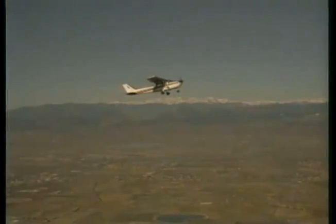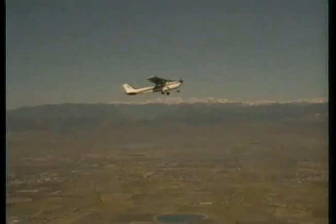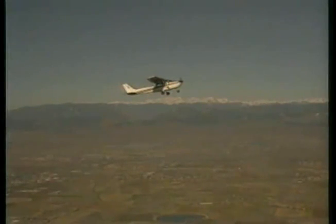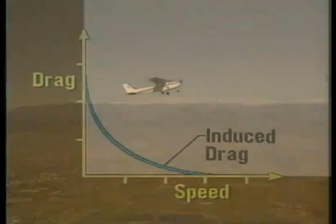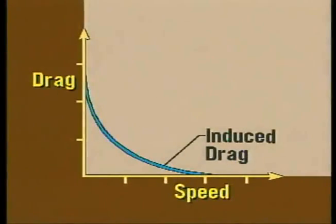As the speed of an airplane increases, the effects of parasite drag also increase. In contrast, induced drag is a direct byproduct of lift. It is greatest at slow speeds with a high angle of attack. Conversely, at higher speeds and at lower angles of attack, induced drag decreases.